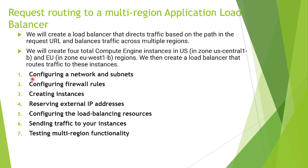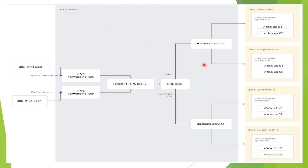These are the steps we will cover in this video: we will configure a network and subnets — some steps I have already done, so our main focus is on the application load balancer. After that we will create firewall rules, then create instances via instance template and instance group, reserve an external IP address, configure load balancing, and send traffic to our instances. Once the load balancer is up, we will also check multi-region functionality.